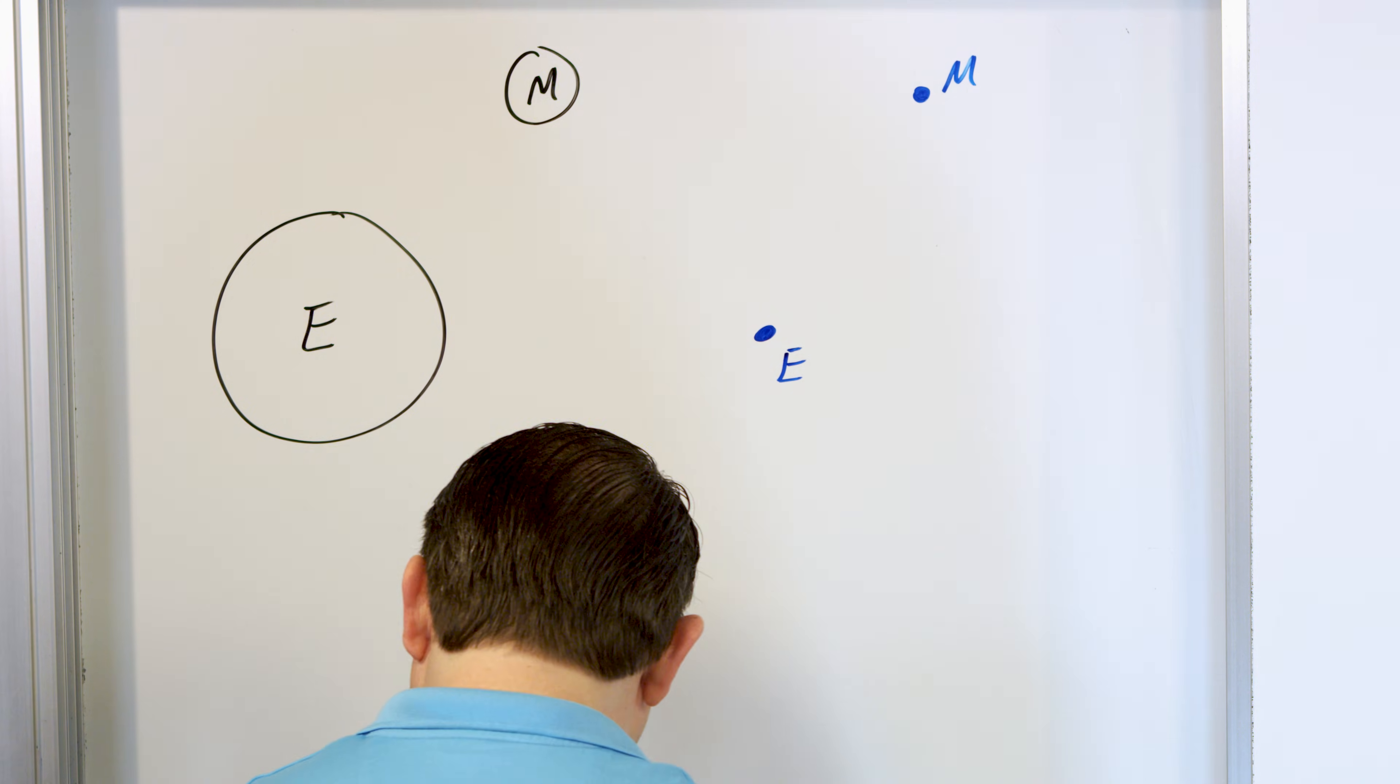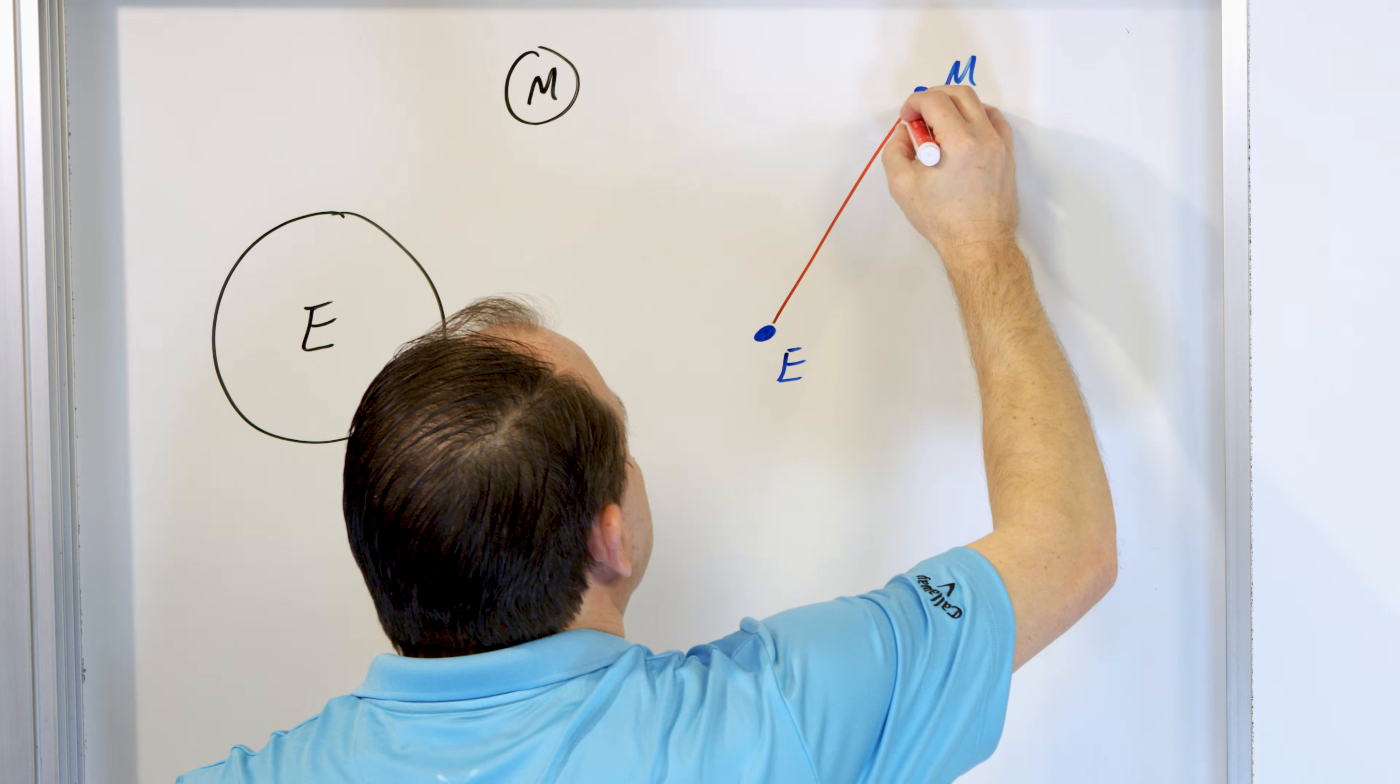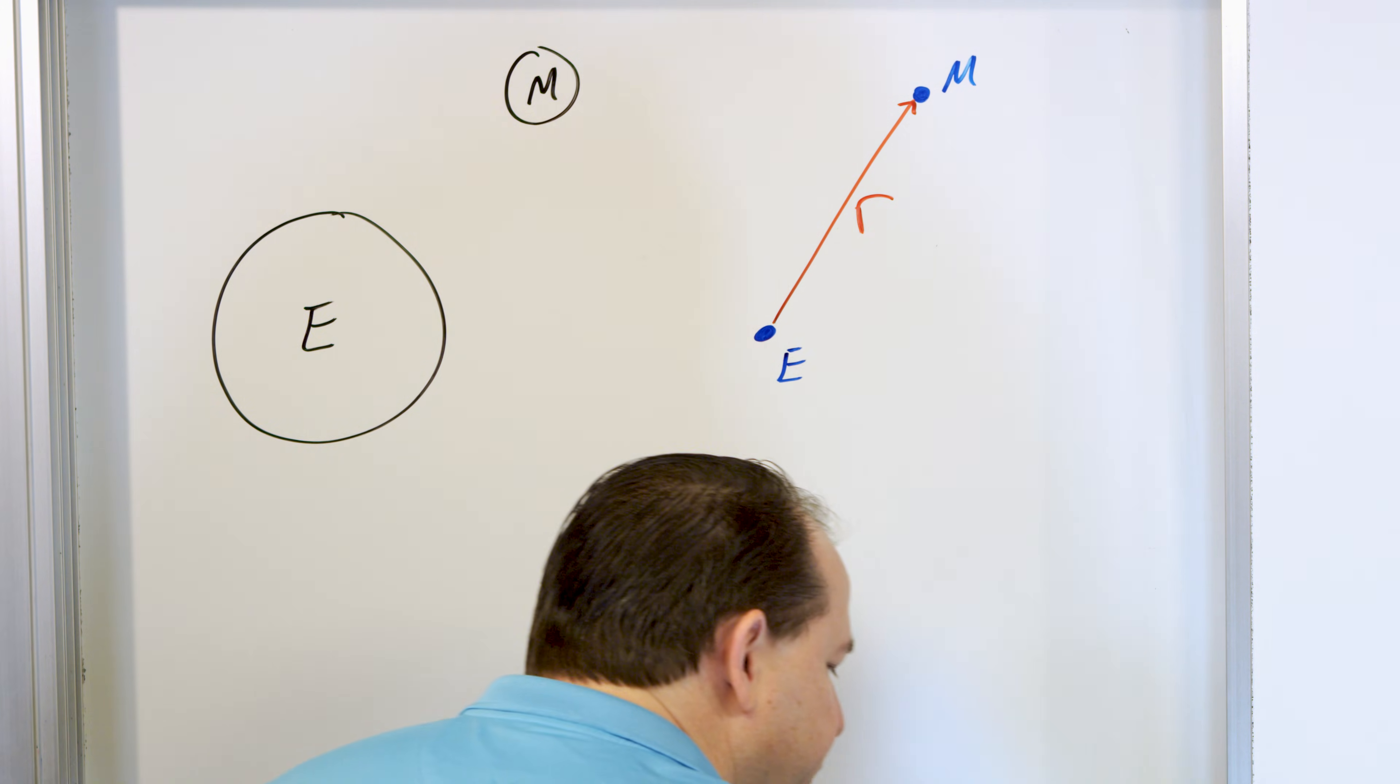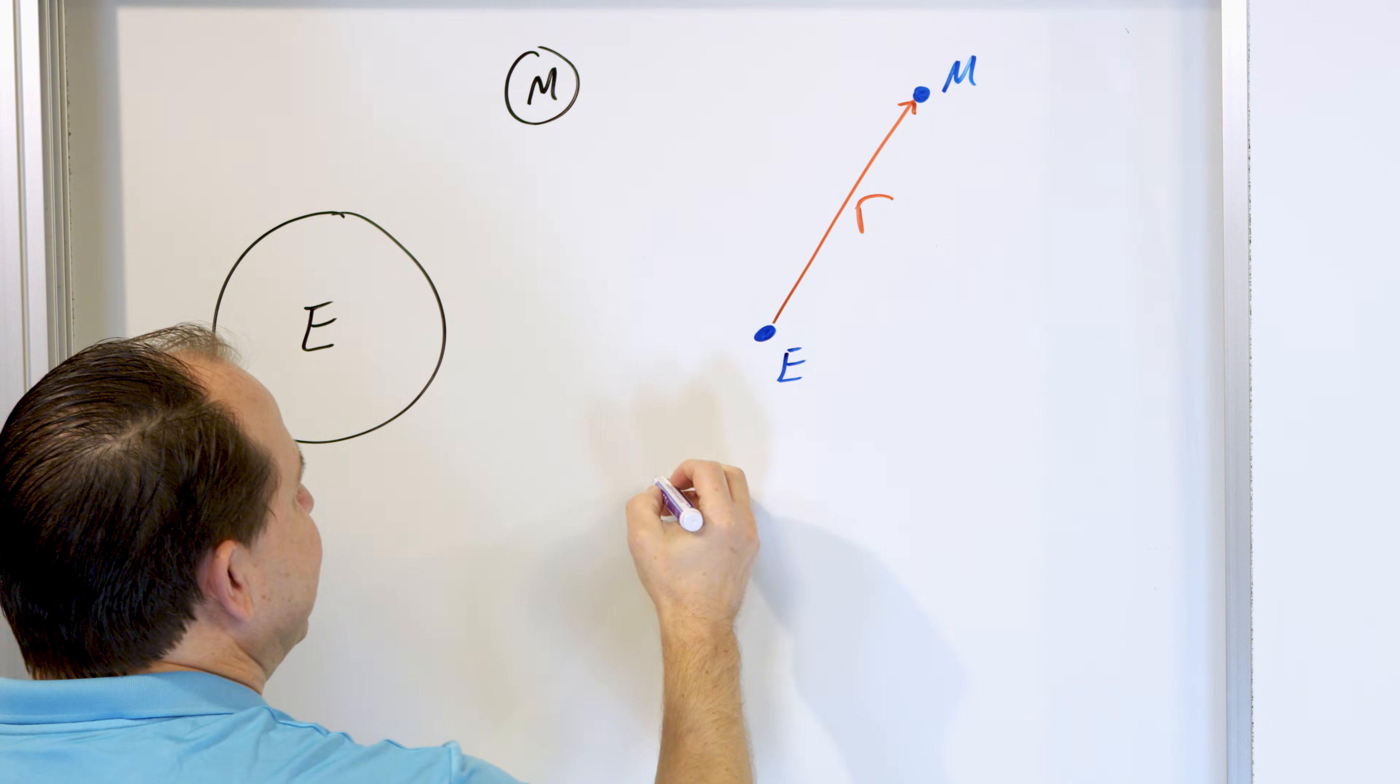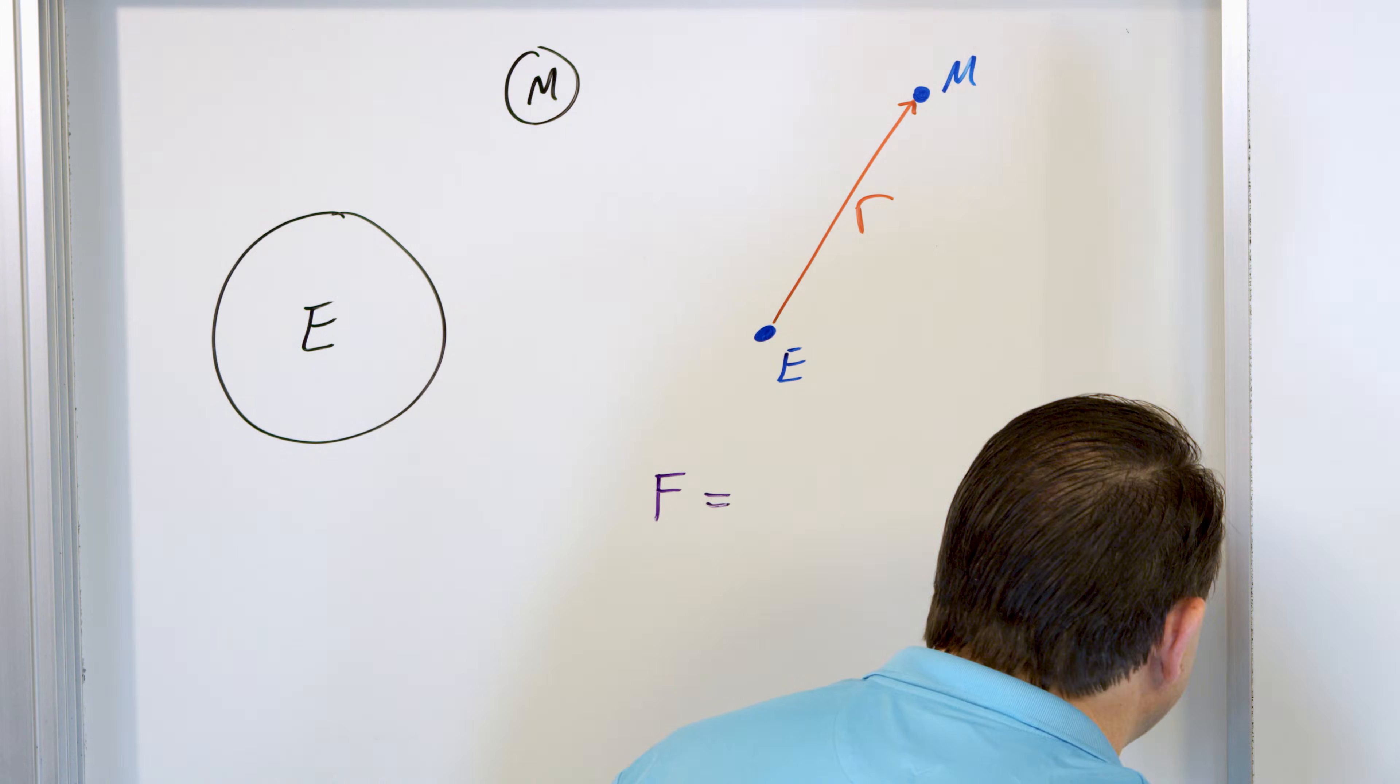Now, why am I doing that? Because I want to define the distance between the Earth and the moon. We're going to call it R. Now, what I want to point out to you is that the law of gravitation, the force between any two objects, is equal to the gravitational constant, which is just a number,